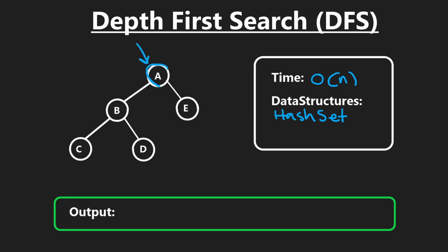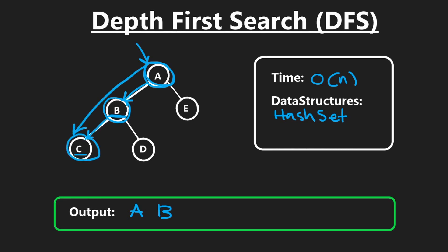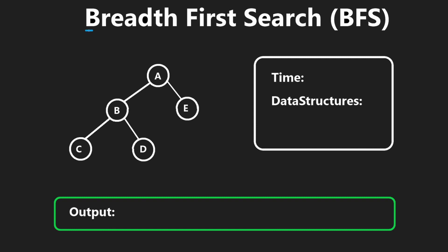Let's say we're doing a DFS on this graph starting from node A — it looks like a tree, and it is, but trees are just special cases of graphs. Starting at A, DFS goes depth first, so we process A, then go as deep as possible: B, then C. We can't go further from C, so we backtrack to the next available node: D. Then finally E. The output is A, B, C, D, E.